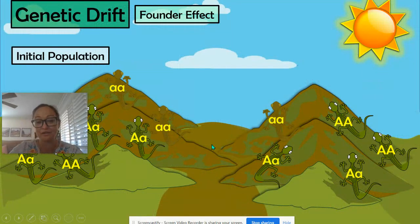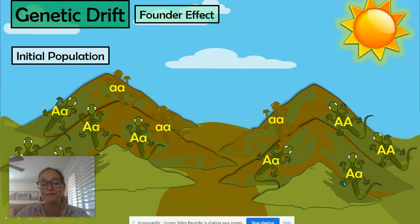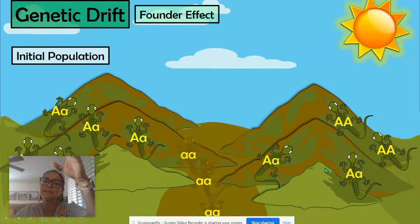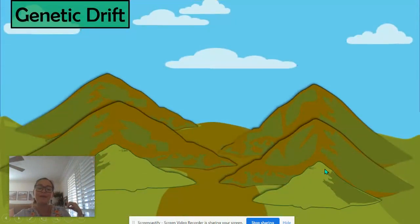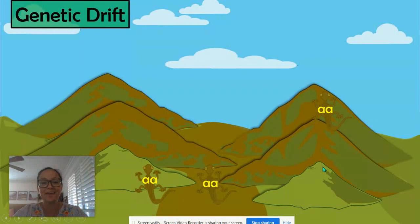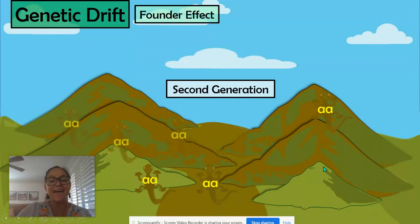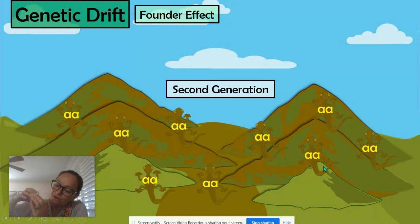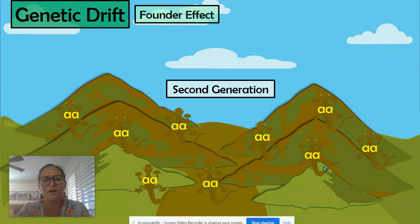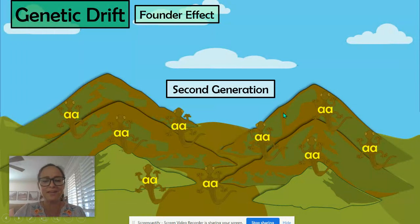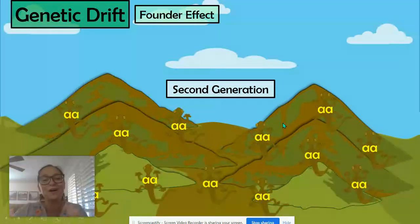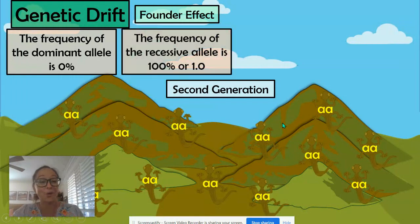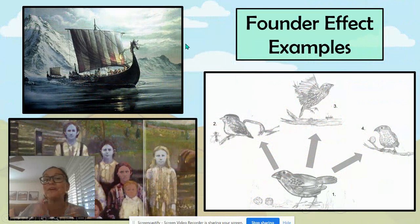The other type of genetic drift is the founder effect. In the founder effect, a few individuals leave a main population and migrate to a new area, where they found a new population and start to reproduce. If you have a small group leave and start a new population, they're not bringing all the variation and all the alleles of their original population with them — they only bring the alleles they carry. That allele frequency does change, but it's random, not based on fitness.